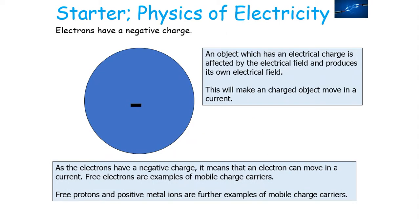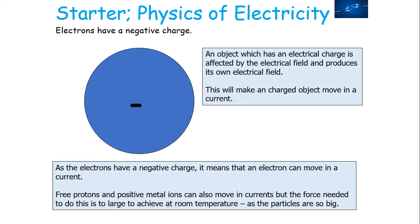As electrons have a negative charge, they can move in a current. Other examples of mobile charge carriers include free protons and positive metal ions — anything which is freely moving and has a charge can be a mobile charge carrier. We tend to focus on electrons because the force needed to move free protons and positive metal ions tends to be very large, as these particles are much larger than electrons.